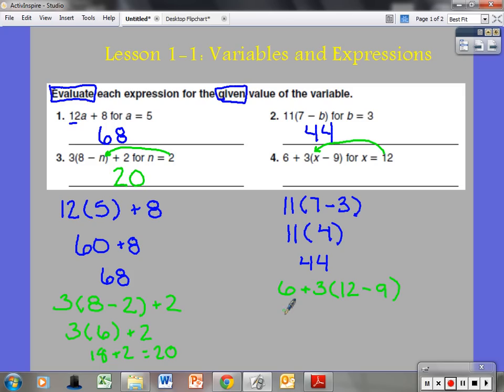Parentheses first. I have 6 plus 3. 12 minus 9, that is 3. I have addition and multiplication here. I must multiply first. 3 times 3 is 9. I now have 6 plus 9. 6 plus 9 equals 15. Alright, let's take a look real quick at one more.